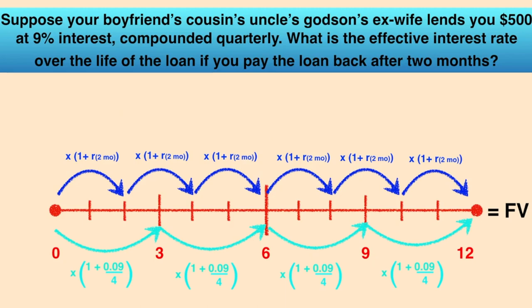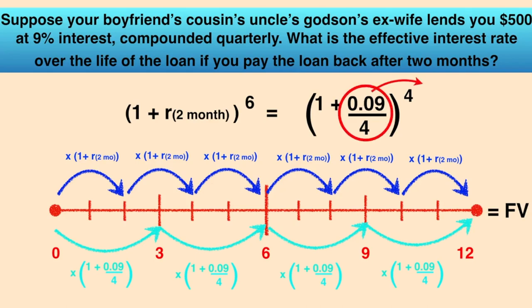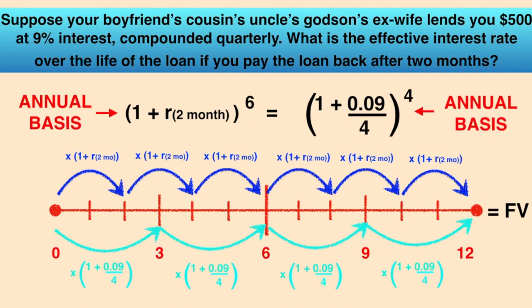We can display this as 1 plus 9% over 4 to the power of 4 should be the same as 1 plus the return for two months to the power of 6. Note that 9% over 4 is our APR divided by the number of periods in a year, 4, to get the rate that we earn for one quarter, which would be compounded four times in a year. Here, we're expressing both of these periodic returns on an annual basis. We do this so it's easier to compare the two situations. We know that there are four quarters in a year and six two-month periods in a year. It's sort of like finding the lowest common denominator of two fractions, or putting both rates on the same playing field, annual terms.